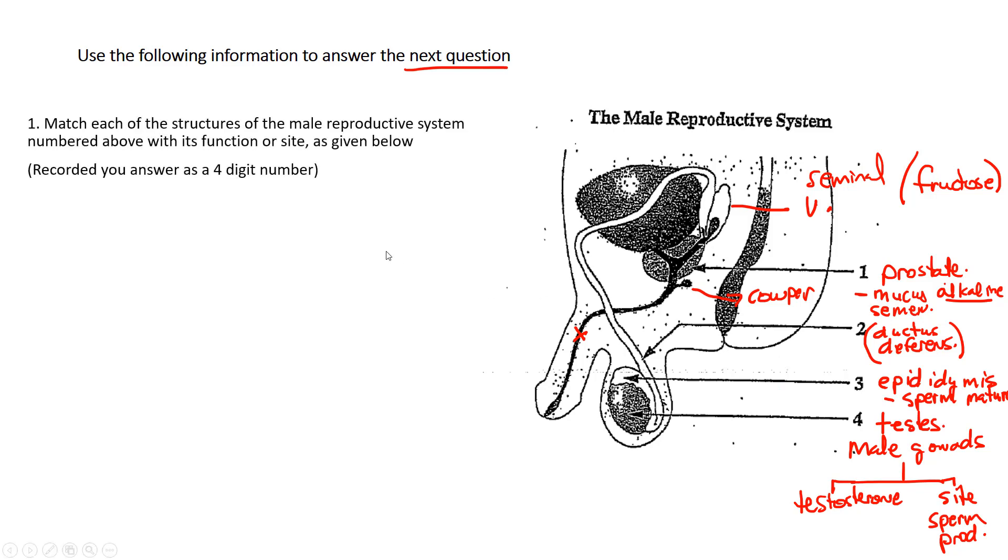Let's take a look at the question now. It says match each of the structures of the male reproductive system numbered above with its function or site given below. It says record your answer as a four digit number. Make sure you pay attention to that. I'm always surprised when marking some of these exams that they don't read that part and they only put two or three here. Make sure you pay attention to how many digits your answer is going to be.